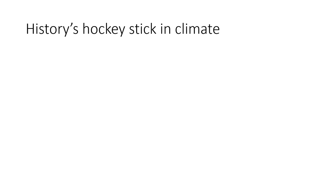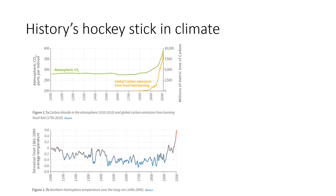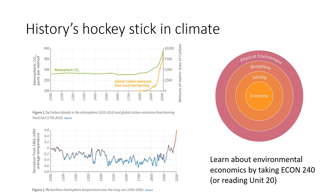Of course, not everything we've seen over the last couple of centuries has been good. We also see a hockey stick in climate. If you look at global carbon emissions, before 1800 they were essentially zero, and then they took off. That's reflected in atmospheric CO2, which for centuries was well below 300 parts per million and now is approaching 400 parts per million. Following that is also temperature, which does vary a lot year to year, but over the last century you see a clear uptick in temperatures, and of course we're expecting that to continue. This reminds us that the economy is actually a part of society, which is part of the biosphere, which is part of the physical environment. If you're interested in environmental economics, I encourage you to take Econ 240 and to read Unit 20 of this course.